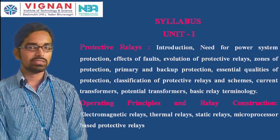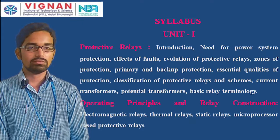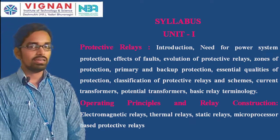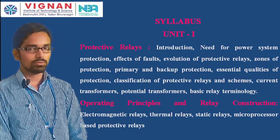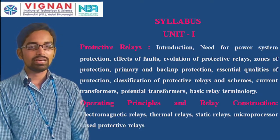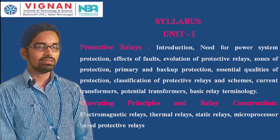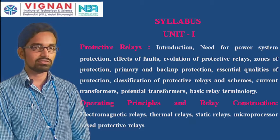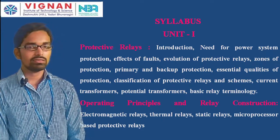In this power system protection subject you are having five units. Unit one is protective relays. In that you are having the introduction of protective relays, need for power system protection, effects of faults, evaluation of protective relays, zones of protection, primary protection and backup protection, essential qualities of protection, and classification of protective relays and schemes.